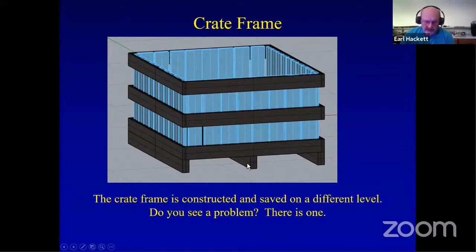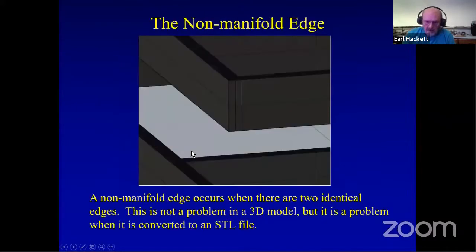Now there's a problem with this. And I didn't realize it when I was drawing it up, but there is a problem and it's called a non-manifold edge. There are two problems in making models. One is a naked edge and the other is a non-manifold edge. And the non-manifold edge is right here, right there.